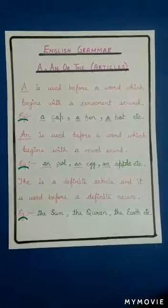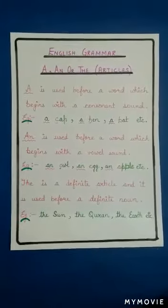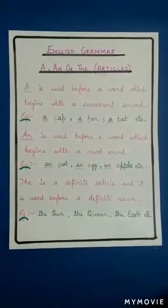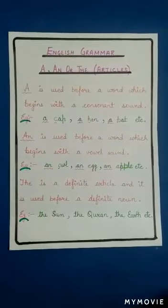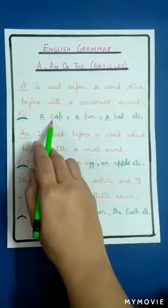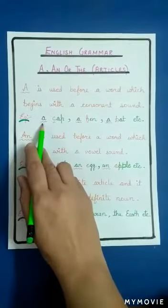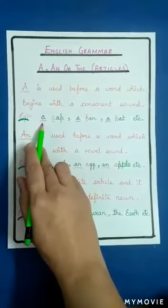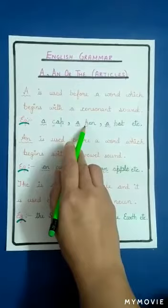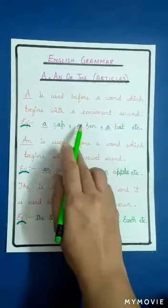'A' is used before a word which begins with a consonant sound. 'A' tab use hota hai jab koi bhi word consonant se start hota hai. Example: 'a cap' — cap jab hum likhte hain toh 'c' se start hota hai, aur 'c' ek consonant hai, isliye uske aage hum 'a' lagate hain. Similarly, 'a hen' — hen ka 'h' consonant hai, ek consonant se start hota hai, isliye uske aage hum 'a' lagate hain.